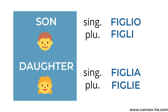Moving on, in Italian we don't have different terms for son and daughter but they need to agree with their gender. So son is figlio in the singular and figli in the plural. While daughter is figlia, singular, and figlie, plural. If you feel like these words are a little bit difficult to pronounce, you can check my lesson on how to say the sound Gli in Italian — I will leave you the link in the description below.